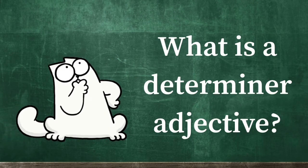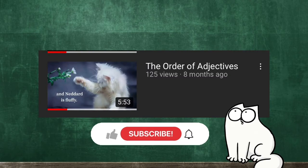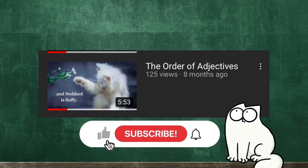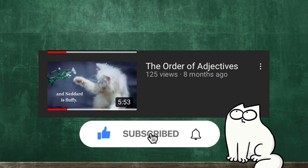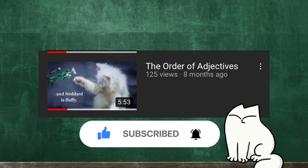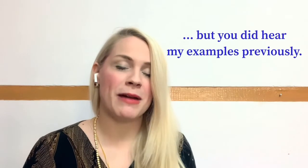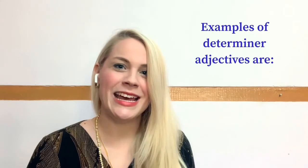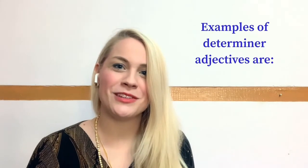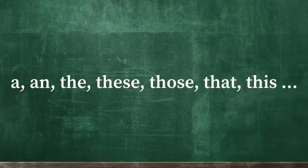What is a determiner adjective? Check out my video — the link is in the description — about the order of adjectives and you'll learn more about that. But you did hear my examples previously. Examples of determiner adjectives are: a, an, the, these, those, that, this, et cetera.